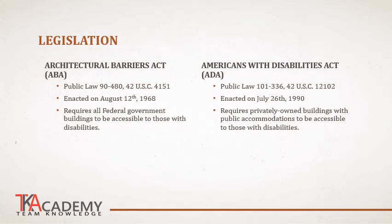So how did all this begin? There are two important pieces of legislation that made accessible design a requirement. Before these acts, people with disabilities were really at a disadvantage in buildings or public spaces. They had no means of moving up and down stairs. Things were out of reach and it was just not at all accommodating. The first legislative act that came into place was the Architectural Barriers Act, or the ABA. This is public law, going back to August 12th of 1968, when it was passed and signed into law. The act basically requires all federal government buildings to be accessible to those with disabilities.